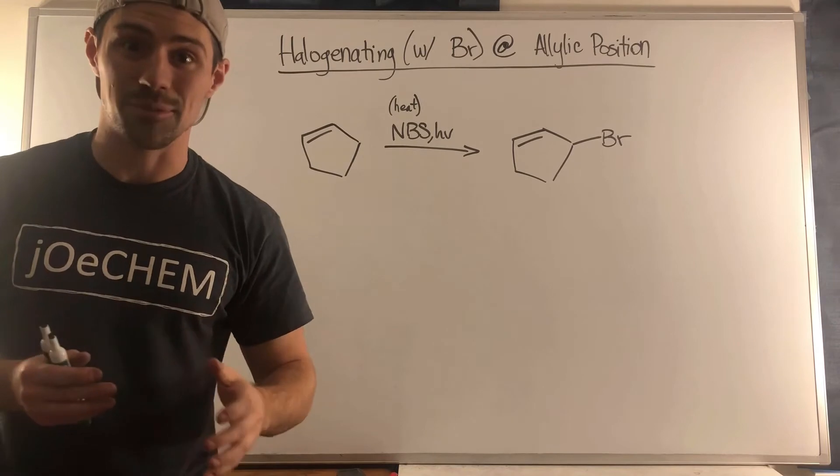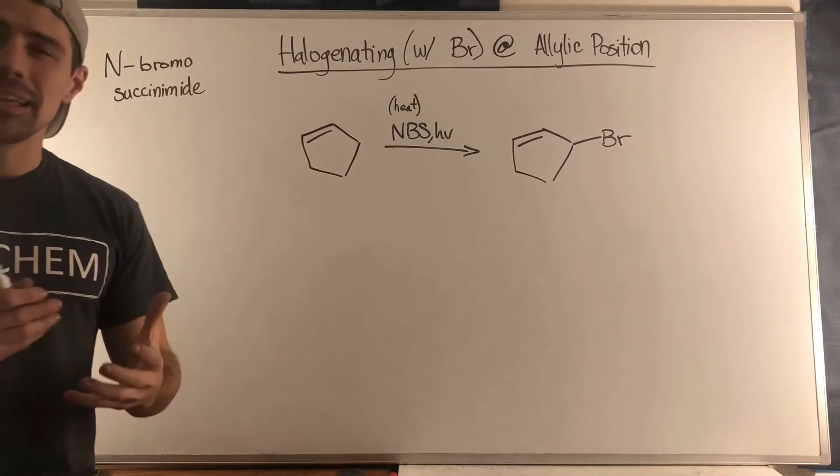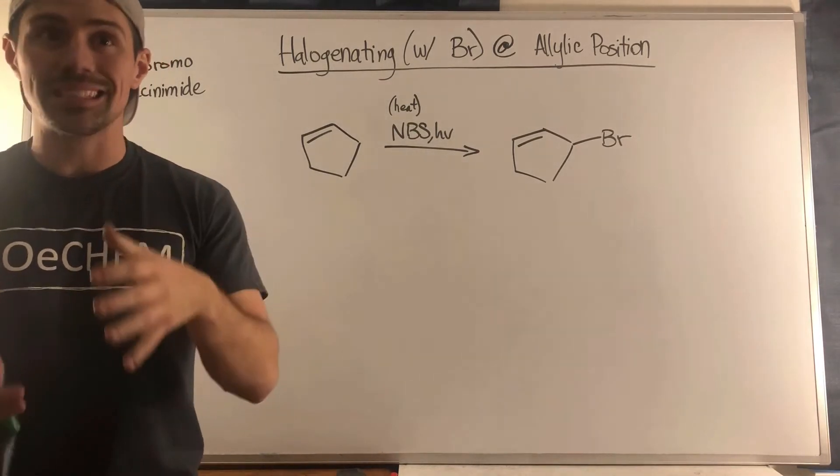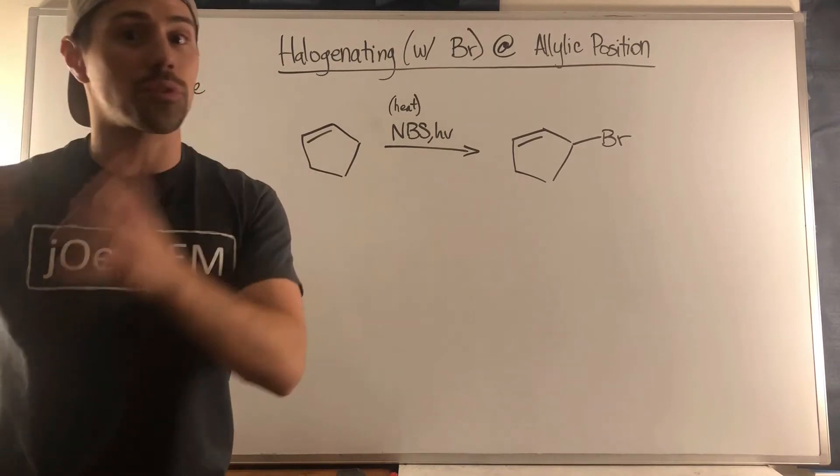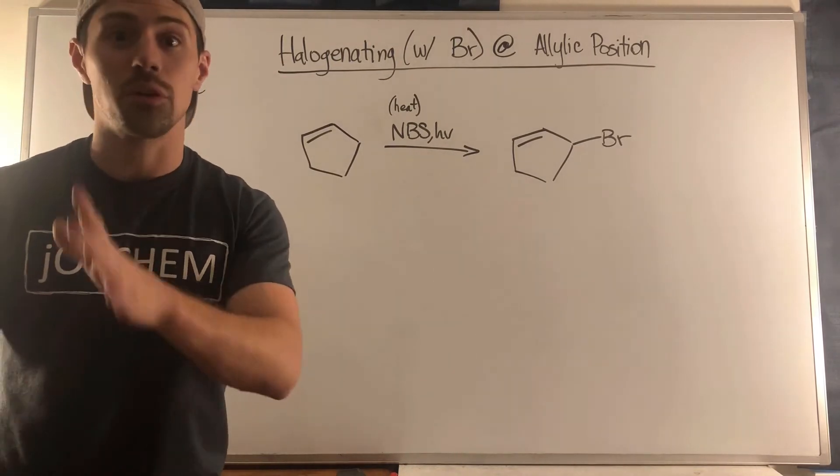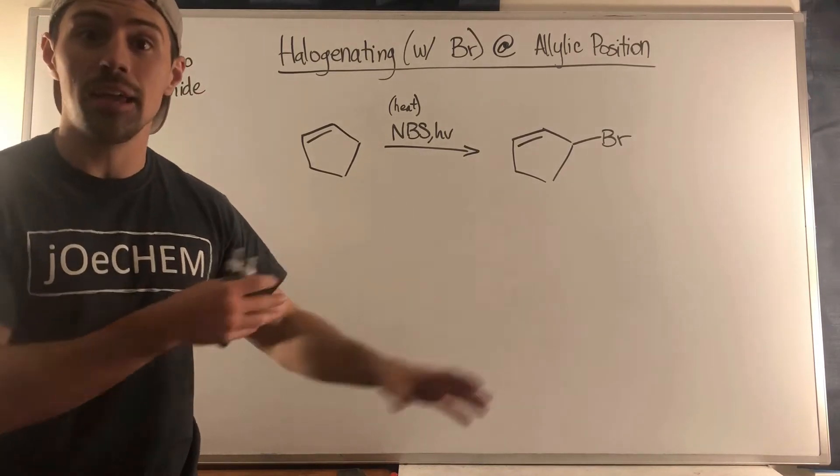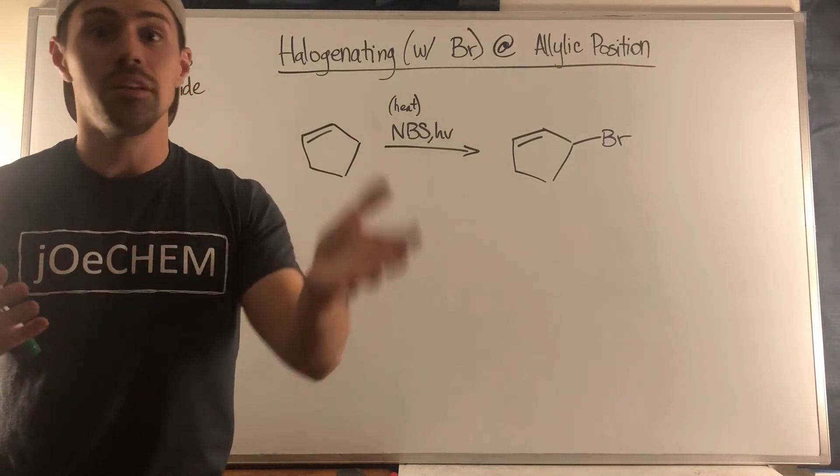How does this work? This mechanism really isn't asked a whole bunch, but I think asking the difference as to why you would use NBS for the allylic position versus free radical halogenation is a fair question. Maybe be aware of the details of what I'm about to say, but just remember why you can't use the free radical halogenation in terms of the double bond being brominated versus the allylic position.